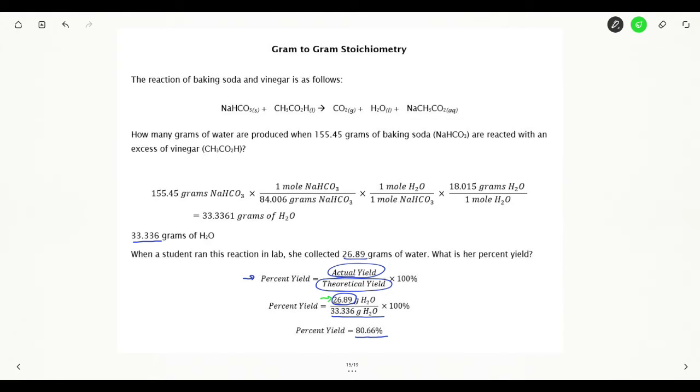My 26.89 was given to me in the problem. That has four sig figs. My 33.336 has five sig figs. Again, I calculated that previously and I went over sig figs for that. So it is going to be my 26.89, my four sig figs, that is going to limit my calculation.